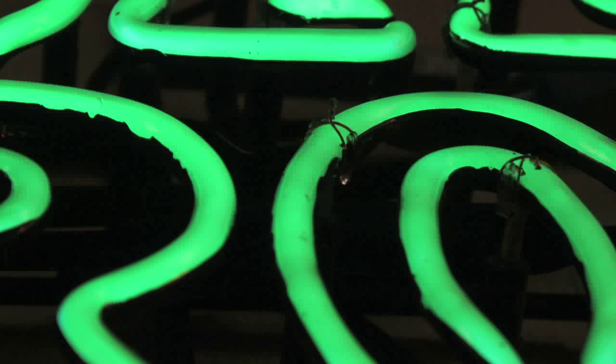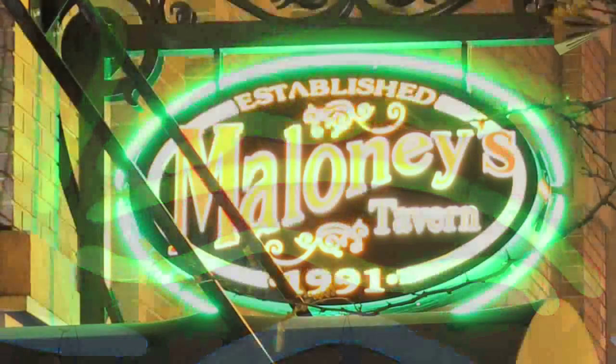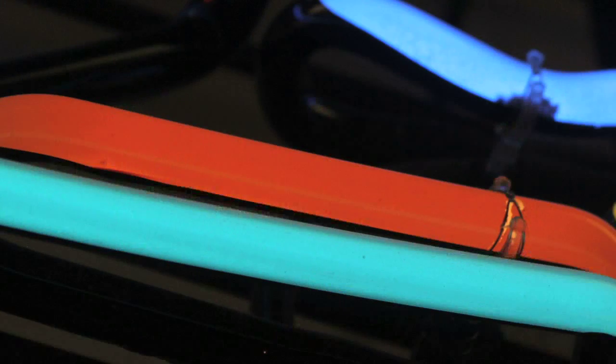If you want green, you can use yellow pigmented glass, pump it with argon and mercury, and you'll get green because the blue shining through the yellow makes green. Or you can pump it with neon and get orange.